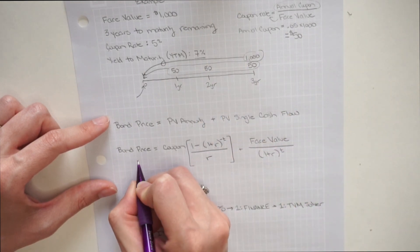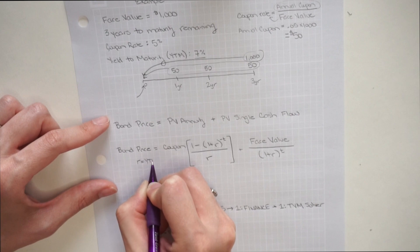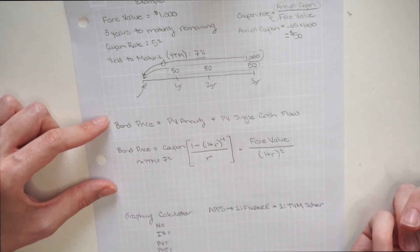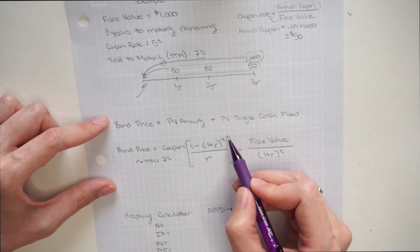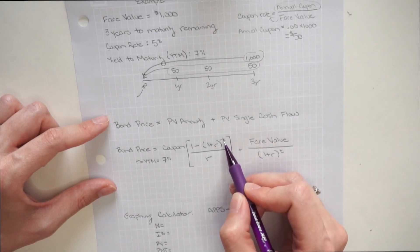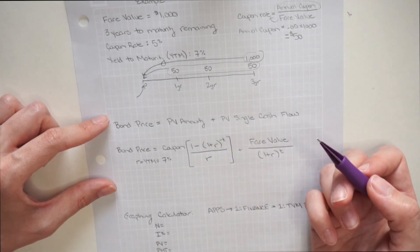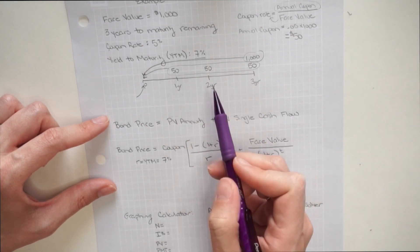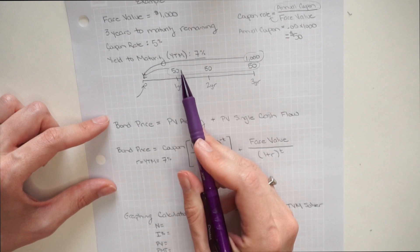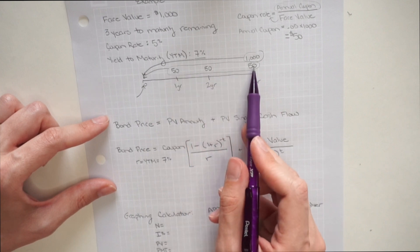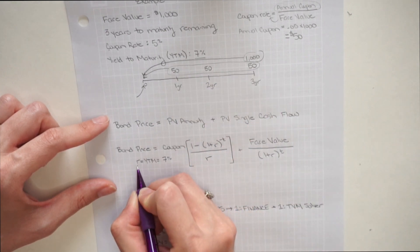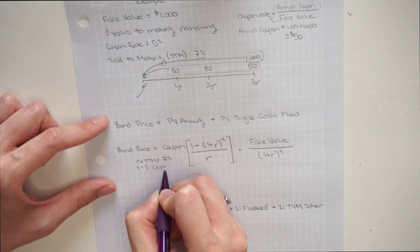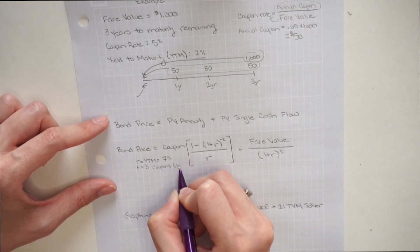So our R is our yield to maturity, which is 7%. Then for our T, T in these annuity equations, I like to think of as your total number of payments or total number of coupons. So our total number of coupons here is one, two, three. So our T is going to be three coupons, or in this case, years.